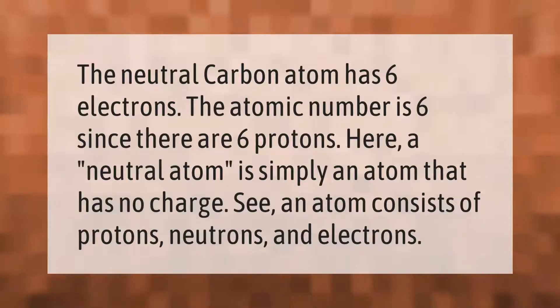The neutral carbon atom has six electrons. The atomic number is six since there are six protons. Here, a neutral atom is simply an atom that has no charge. An atom consists of protons, neutrons, and electrons.